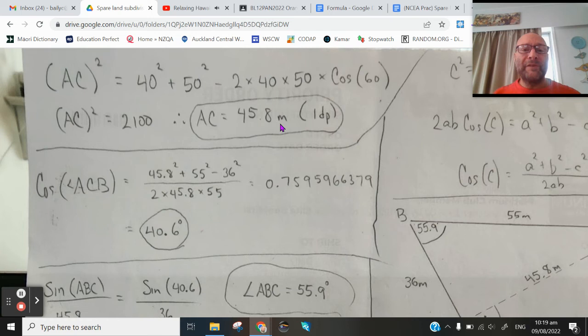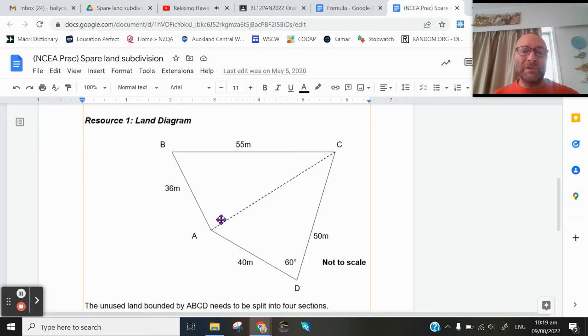So from A to C, 45.8 meters. Go ahead and add that in, 45.8 meters. So there's one skill done.